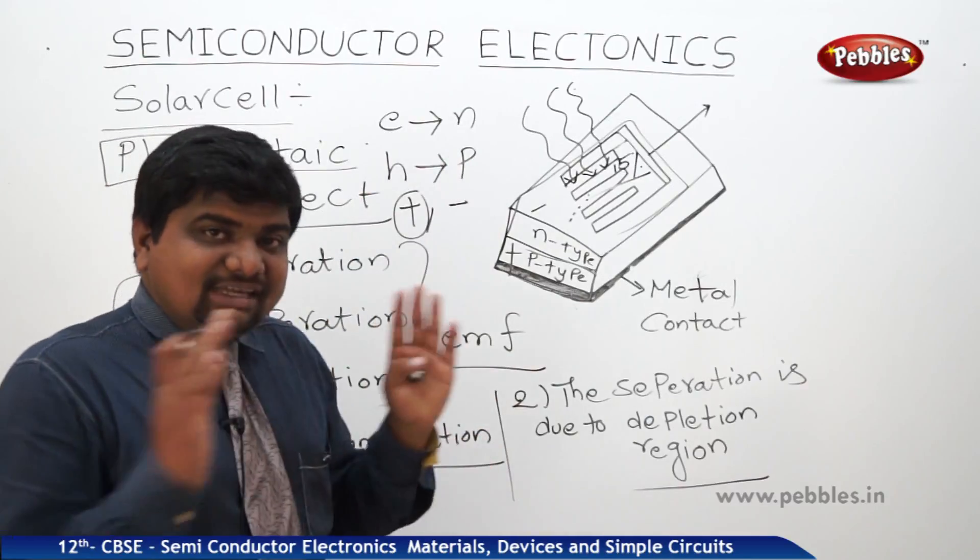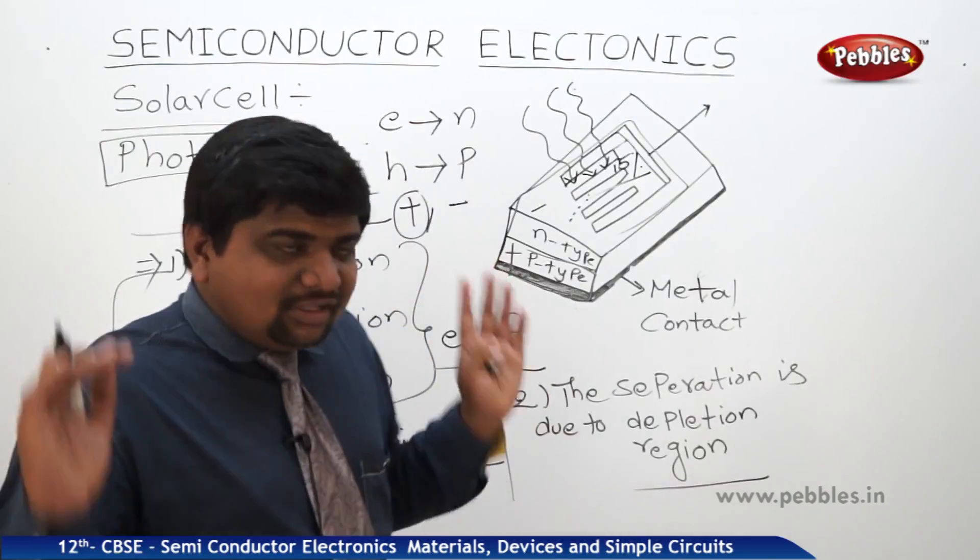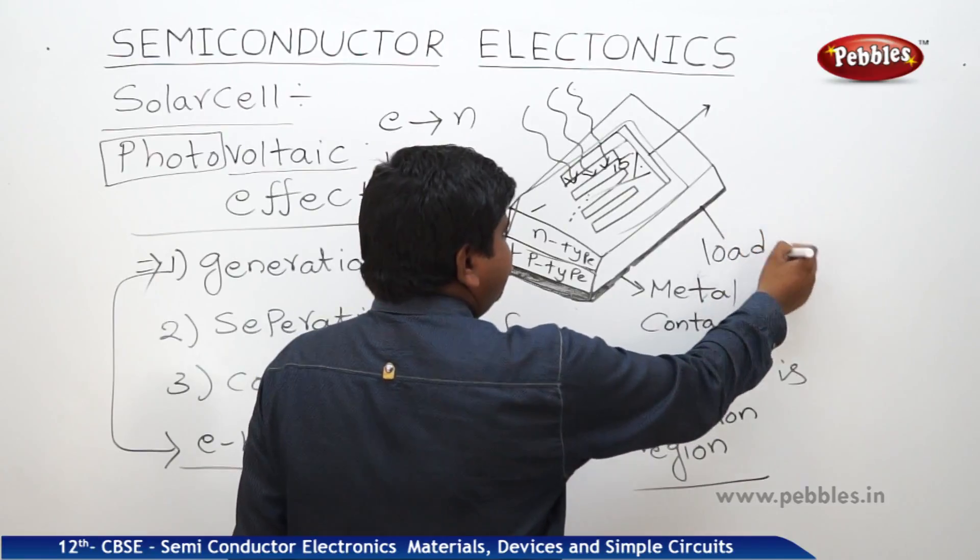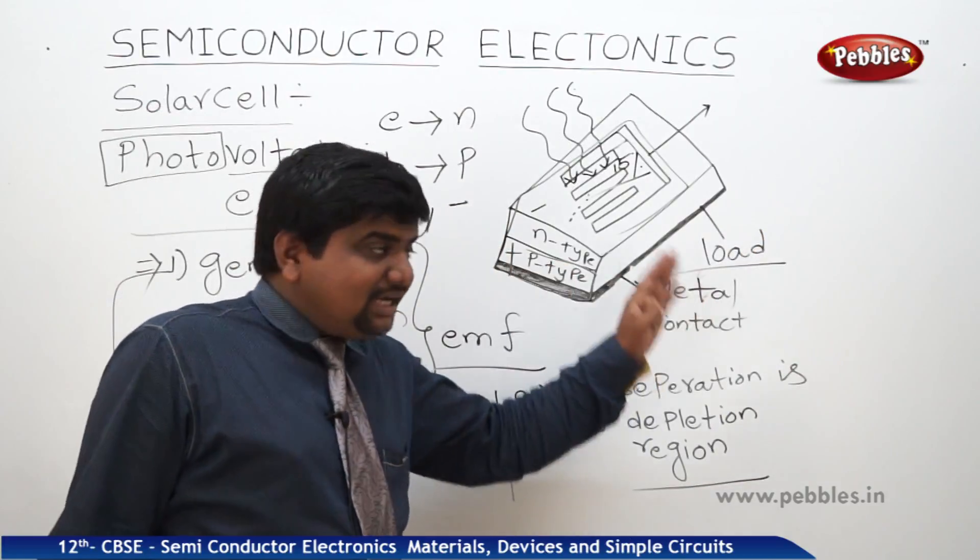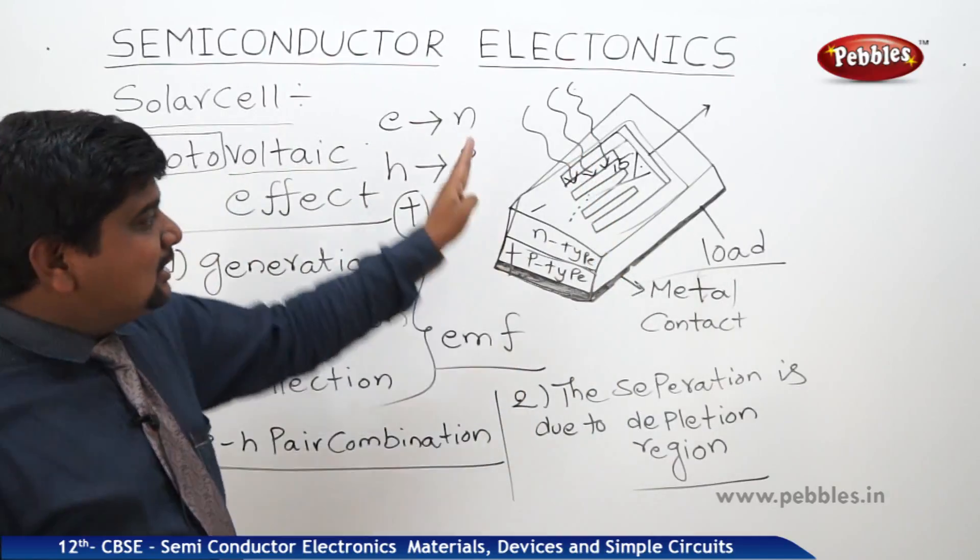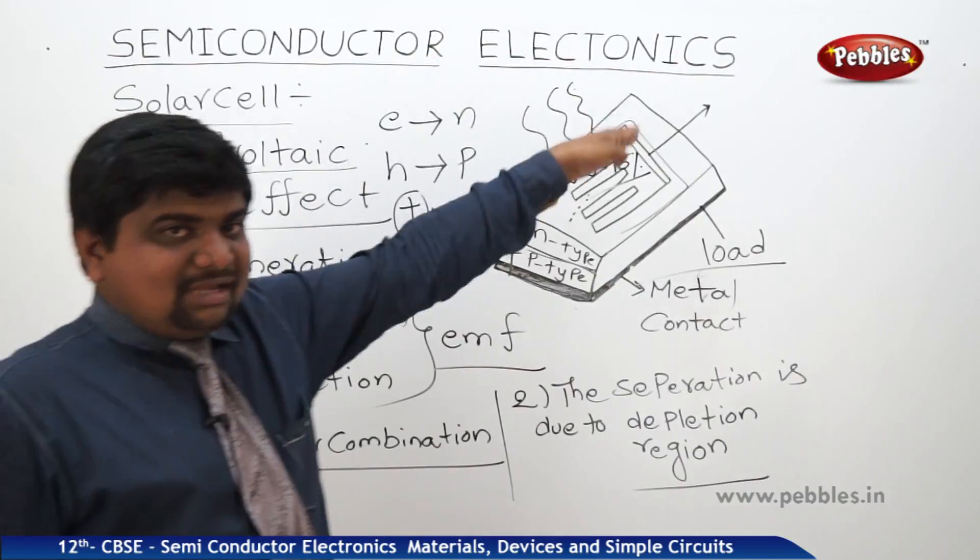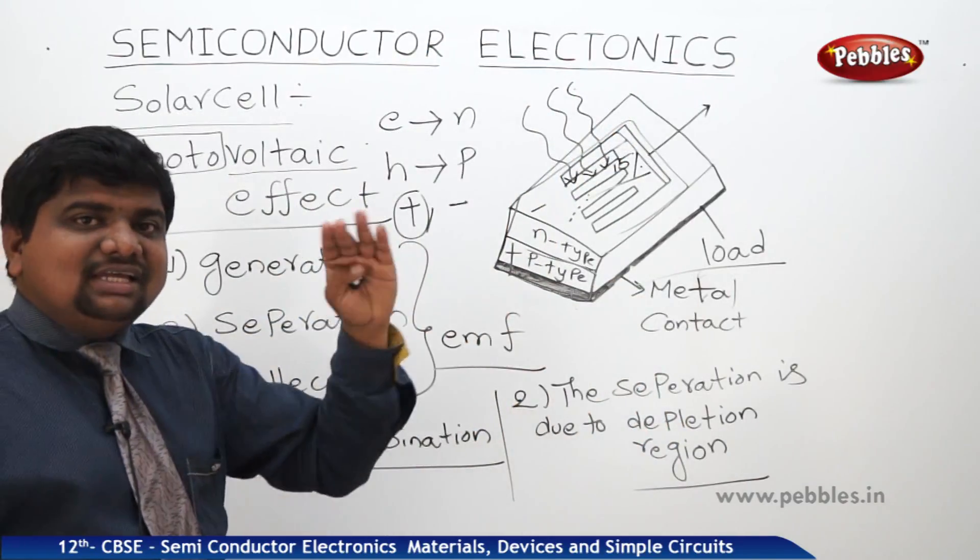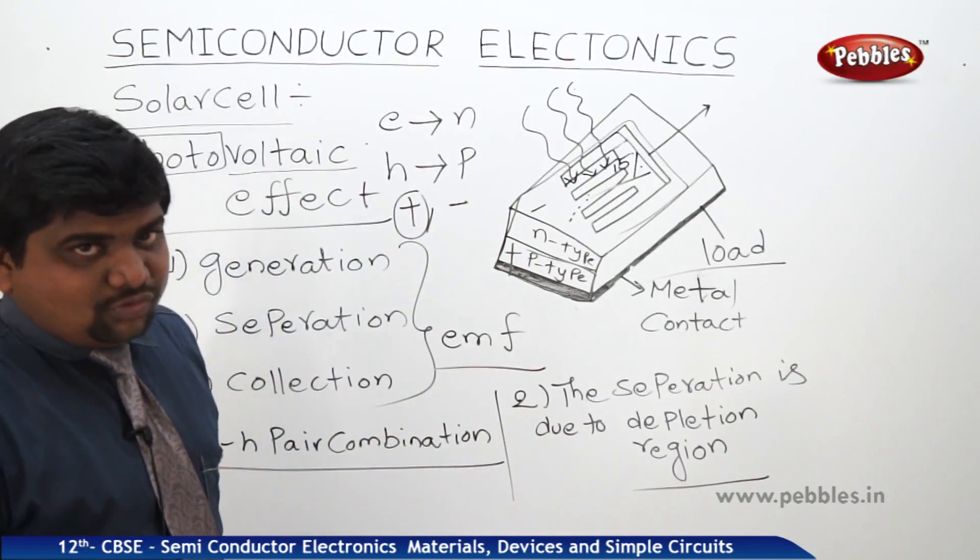Once the potential is developed, this potential should be transformed one end to another end. For that purpose, we should apply a load. Once the external load is applied to the solar cell, then this potential can transfer to the P-type to n-type or n-type to P-type depends upon the majority and minority level of the charge carriers. Such like that, the solar cell is useful.